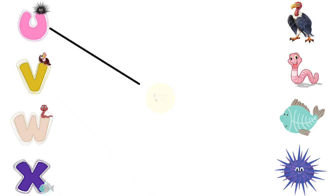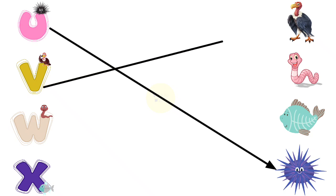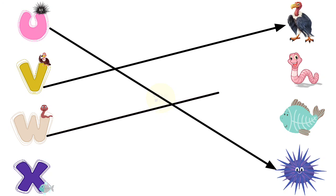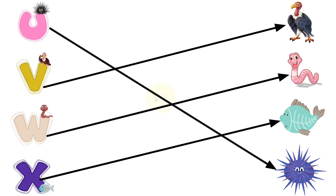U for urchin, V for vulture, W for worm, X for x-ray fish.